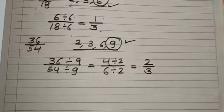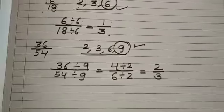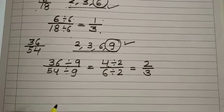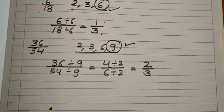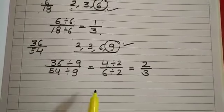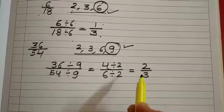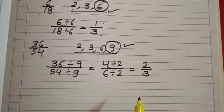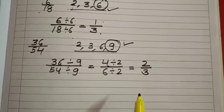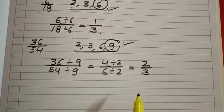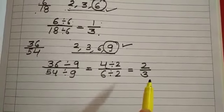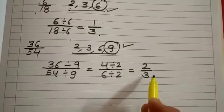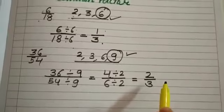We can keep reducing a fraction until the numerator and denominator in the reduced fraction have no common factor other than 1.